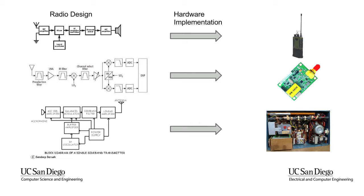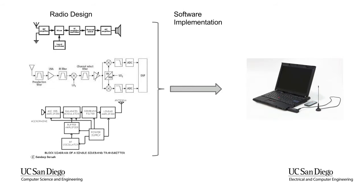On the other hand, a software implementation takes all of those blocks and puts them into code on your computer. The only hardware you particularly need is some kind of antenna for transmission and receiving.